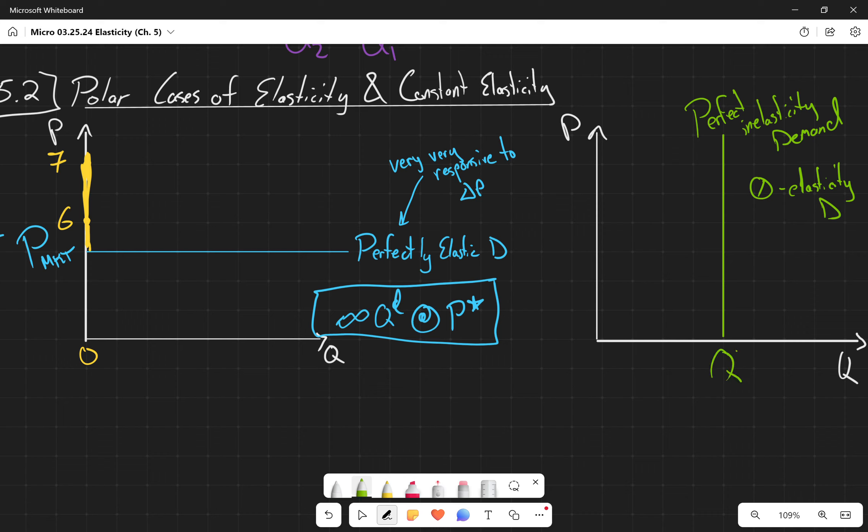The zero elasticity demand curve is because there's going to be zero change in the quantity demanded. The quantity demanded is always going to be at this equilibrium regardless of what the price is. If you charge five dollars, you're going to be selling Q star. If you charge eight dollars, you're going to be selling Q star. If you charge two dollars, you're going to be selling Q star.